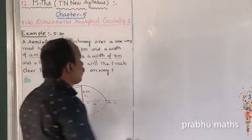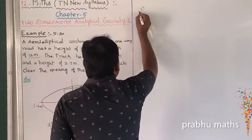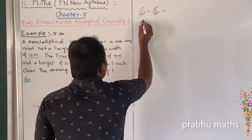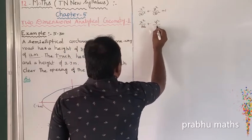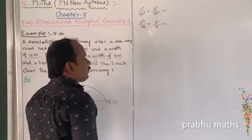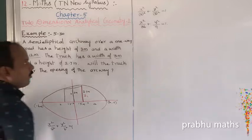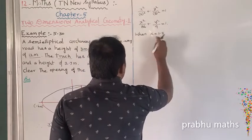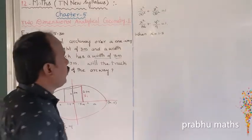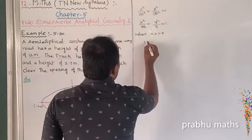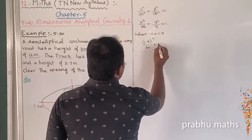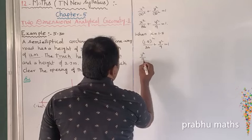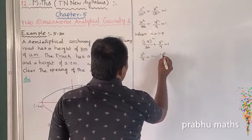Here a = 6 and b = 3. So the equation becomes x²/36 + y²/9 = 1. Now substituting x = 1.5: (1.5)²/36 + y²/9 = 1.